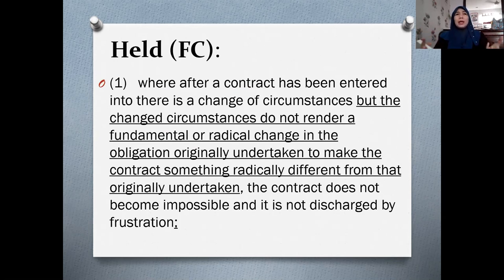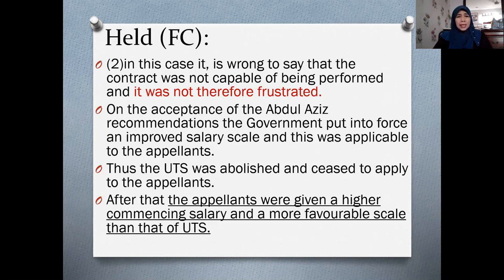The Federal Court held that the purpose of the scheme — for the payment of salaries and allowances, whatever name assigned to it — does not render the contract impossible, and the contract is not discharged by frustration. The court said it was wrong to say the contract was not capable of being performed; it still could be performed. Payment of salary could still be done on the acceptance of the Abdul Aziz recommendations, as the government had put into force an improved salary scale.